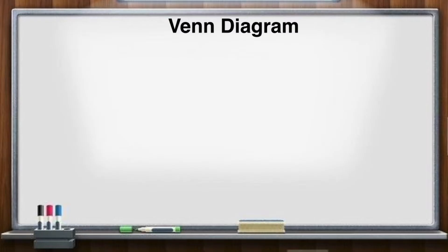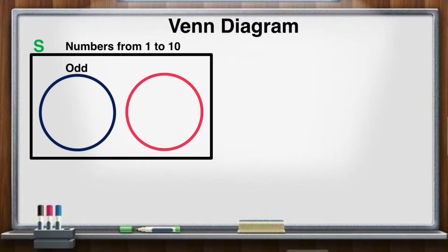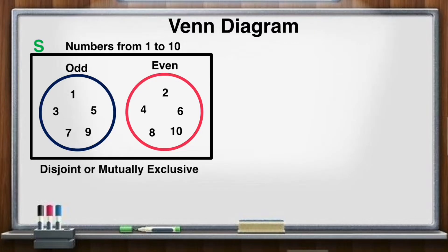Now let's illustrate using a Venn diagram. Let's say we have sample space S — these are numbers from 1 to 10. So we have two events: odd and even. For odd numbers, we have 1, 3, 5, 7, and 9. For even numbers, we have 2, 4, 6, 8, and 10. As you can see, we do not have the same numbers or common numbers. That's why we call it disjoint or mutually exclusive events.